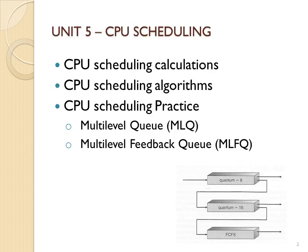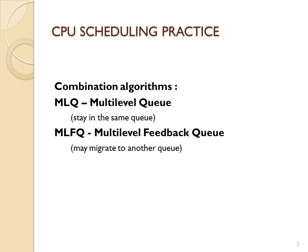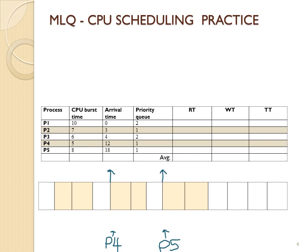With multi-level feedback queue, a process may migrate to a different queue and use a different algorithm — that's the key difference. In your CPU scheduler programming assignment it will be multi-level feedback queue. Keep in mind as we go through these examples: these are not standards. Anyone can define any type of multi-level feedback queue or multi-level queue with their own described rules.